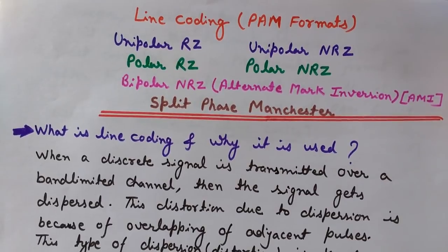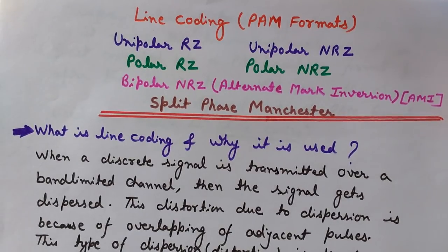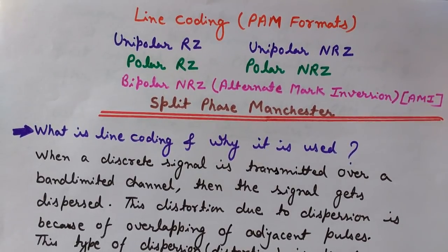We will also discuss why we use line coding, what is the importance and significance of these line coding techniques, and what are various problems that we face while transmitting digital or discrete signals over a band-limited channel, and how we can use line coding techniques to overcome these effects. This video also discusses the inter-symbol interference (ISI) problem.